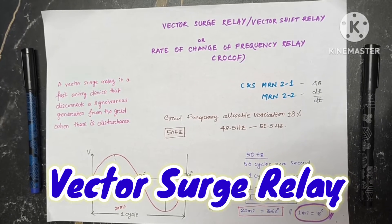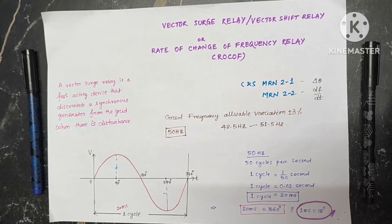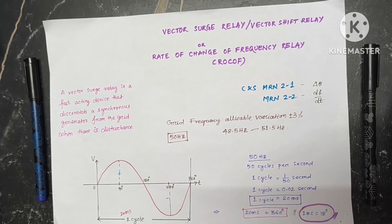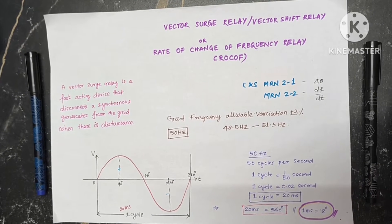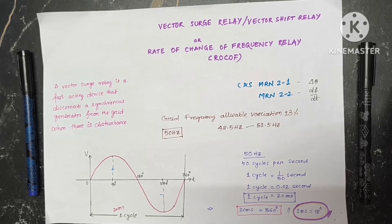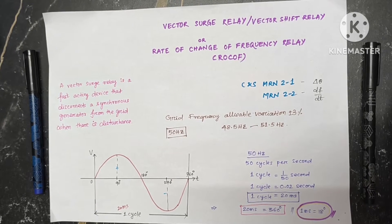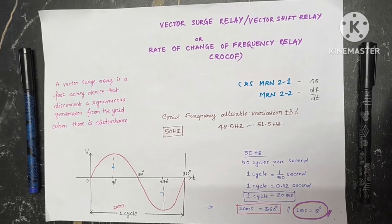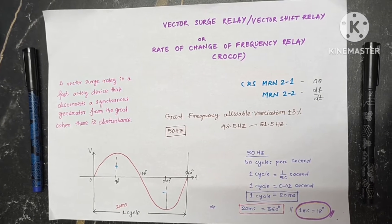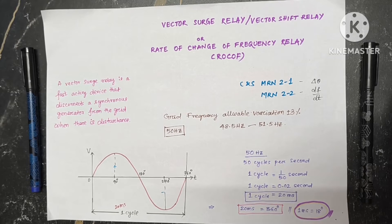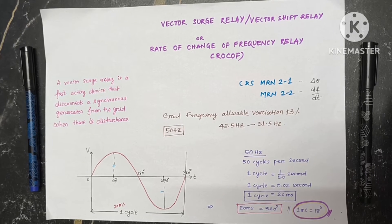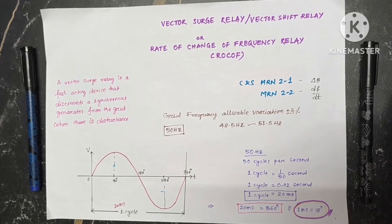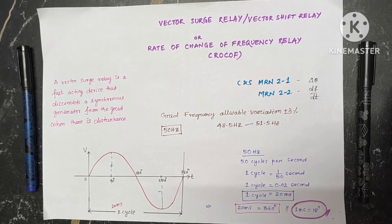Today we are going to discuss a new topic called vector surge relay or vector shift relay. From a generator point of view it is called the rate of change of frequency relay — ROCOF. The vector surge relay is a fast-acting device that disconnects a synchronous generator from the grid when there is a disturbance. The standard grid frequency in India is 50 Hz, with an allowable variation of plus or minus 3%, that is 48.5 Hz to 51.5 Hz. Above 51.5 or below 48.5 is treated as a disturbance.